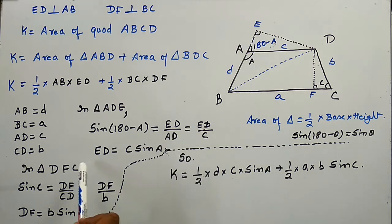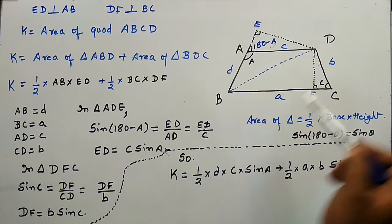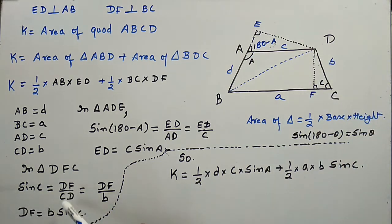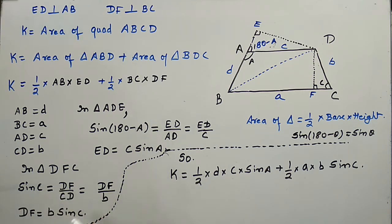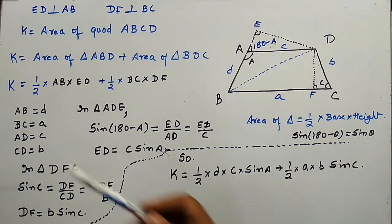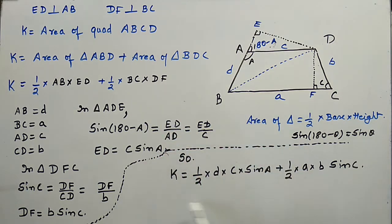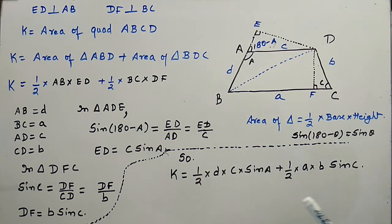Also in triangle DFC, sin C equals DF divided by CD, so DF equals B·sin C. After putting the values of ED and DF we get: K equals one-half into D·C·sin A plus one-half A·B·sin C.